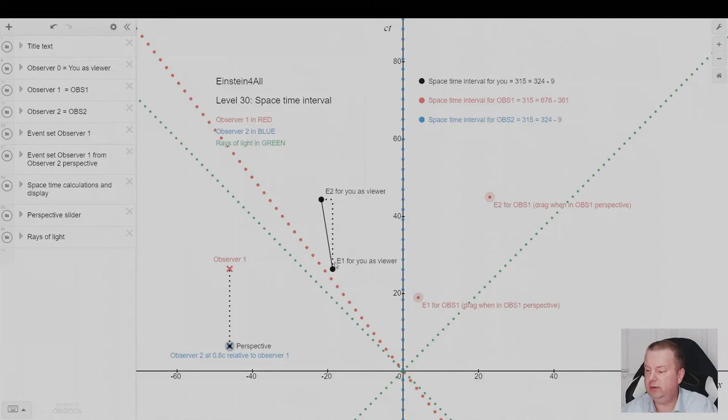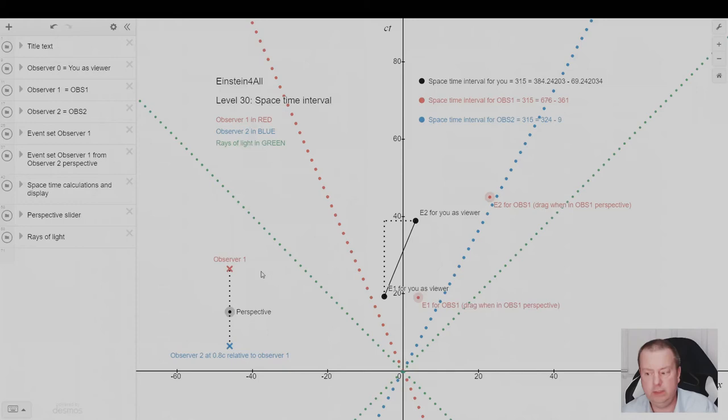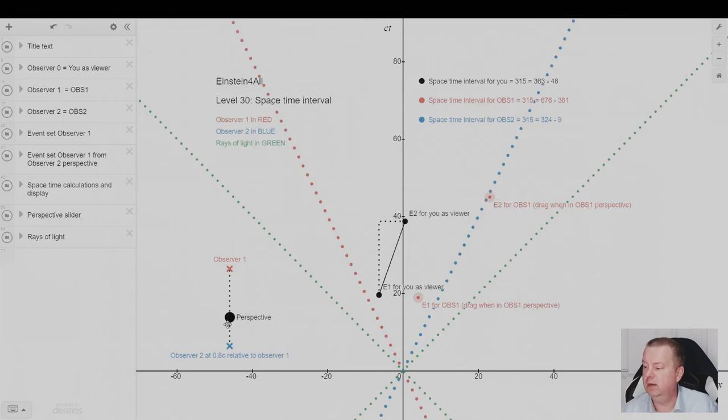So no matter which perspective you are, even if I'm somewhere in between the two perspectives, I'm now in between observer one and two, you as a viewer will have these numbers. If you would take your meter stick or something and put it on the screen, and you do the math, you square it and you subtract it, you will get 315, no matter which perspective we are.